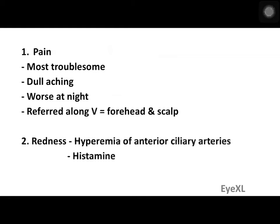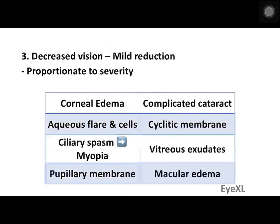The second symptom is redness, due to hyperemia of the anterior ciliary arteries, which has something to do with histamine release. The third symptom is decreased vision. Uveitis does not decrease vision so much — there is only a mild reduction, but the decrease is proportionate to the severity. Less severity means less diminution of vision.